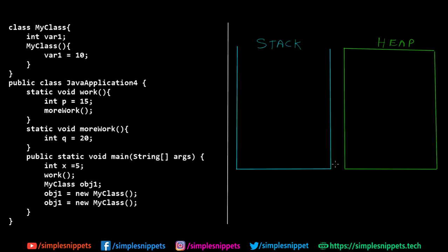As you can see on the screen, on the left hand side we have a program. We have a custom class created by me, then we have the public class JavaApplication4 which has the main method and two static methods: work and more work. We're going to see what happens when the program is executing and how the stack and heap memory is used by the JVM.